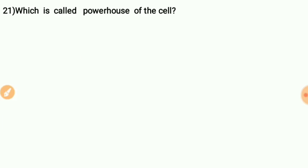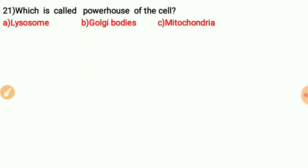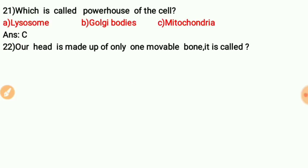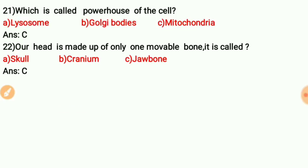Question twenty: Which is called the powerhouse of the cell? Option C is correct — mitochondria. Question twenty-one: Our head is made up of only one movable bone — it is called the jaw bone.